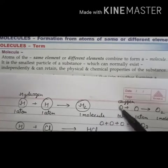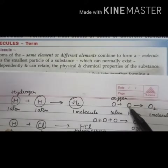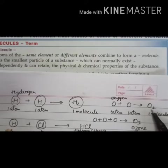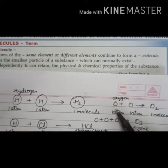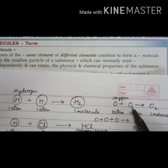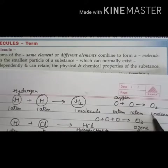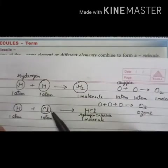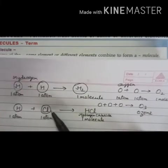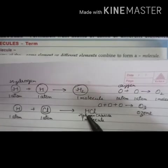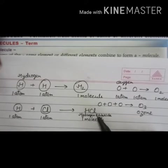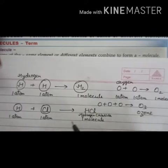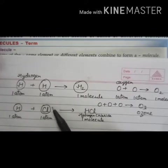The same way, when one atom of oxygen combines with another atom of oxygen, it gives one molecule of oxygen. These are atoms of the same element combined to give a molecule. But sometimes atoms of different elements combine — for example, hydrogen chloride. One molecule of hydrogen chloride is made up of one atom of hydrogen and one atom of chlorine.